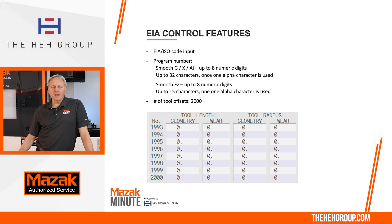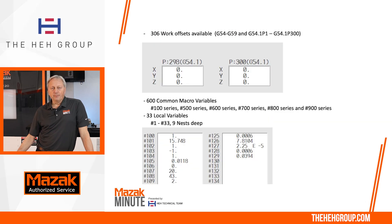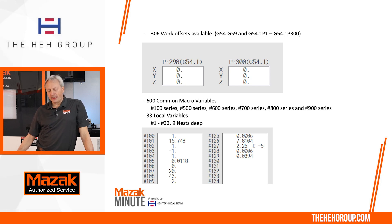For tool offsets, we have a total of 2,000 offsets available. As for the work offsets, we have a total of 306 — you're going to have G54 through G59, and G54.1 P1 through P300.